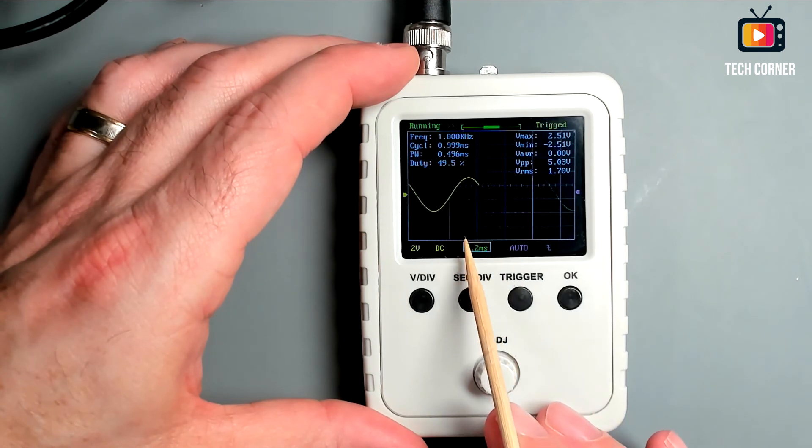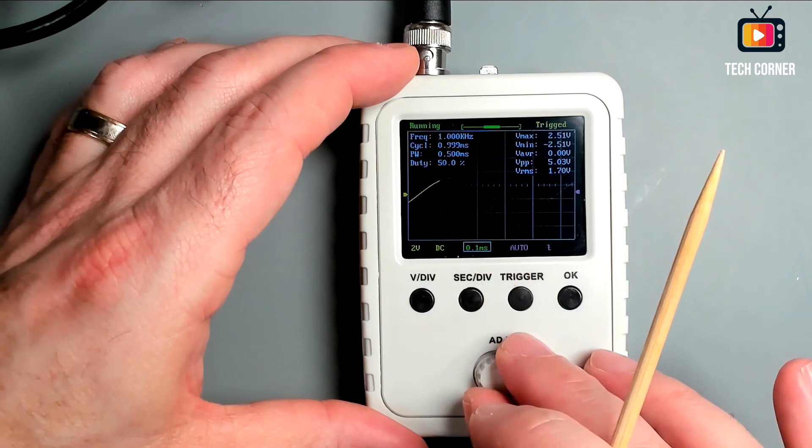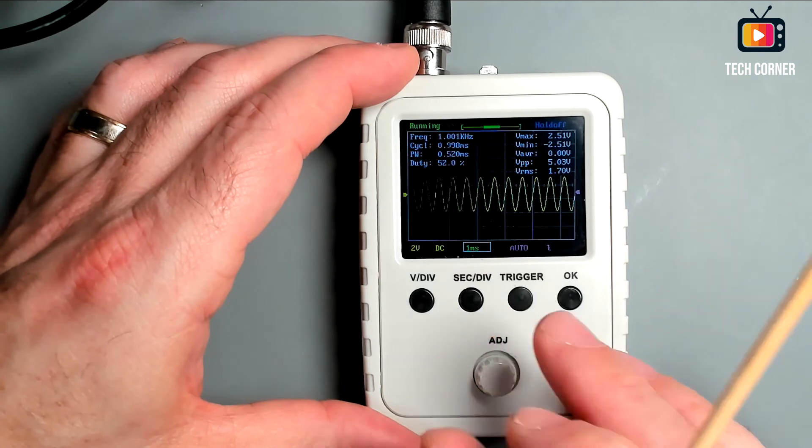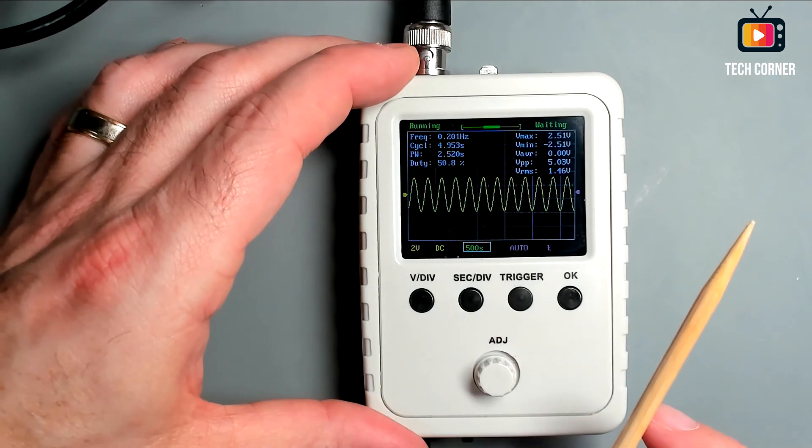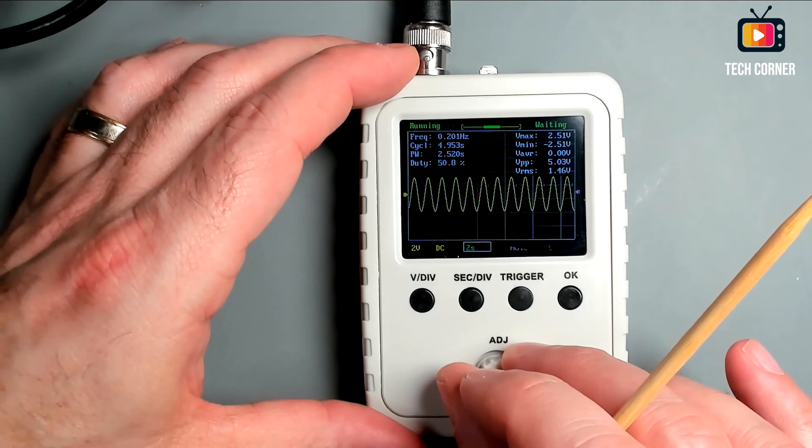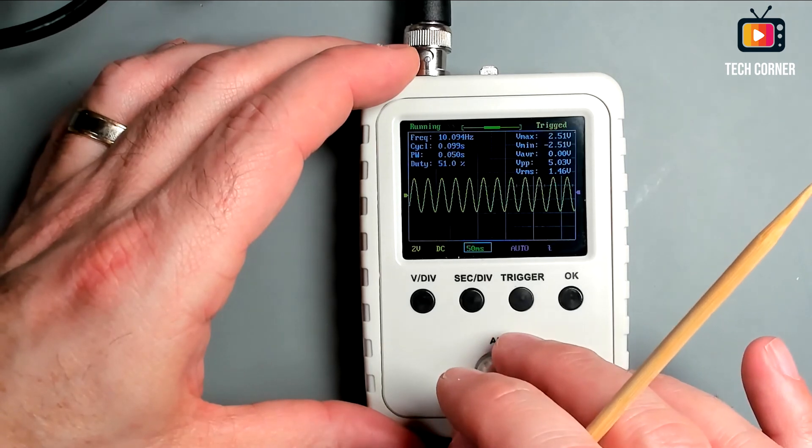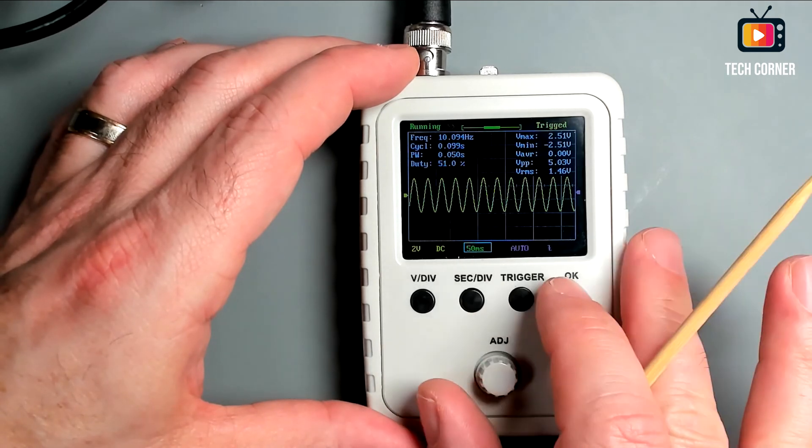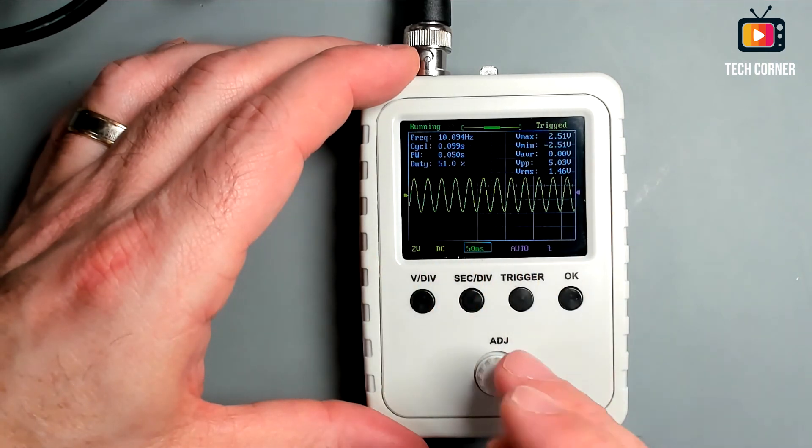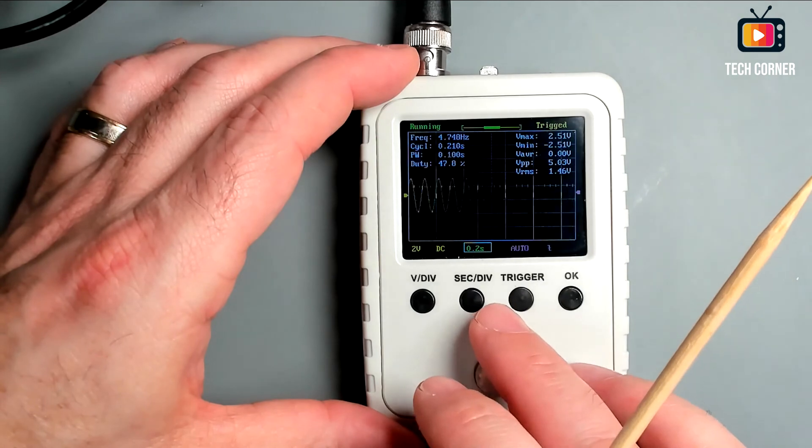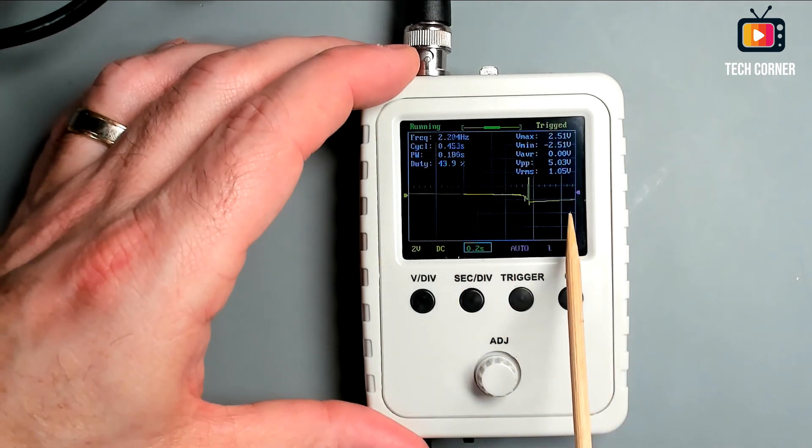Next we have here the time base measurement unit. That is the time that each division, each square represents on the graph. Right now each division is equal to 0.2 milliseconds. And we can change it to 0.1 or 0.5, 1 millisecond, even go to 500 seconds. When we have 15 milliseconds or more, the oscilloscope will start in the rolling mode. That the signal comes slowly from the left to the right.